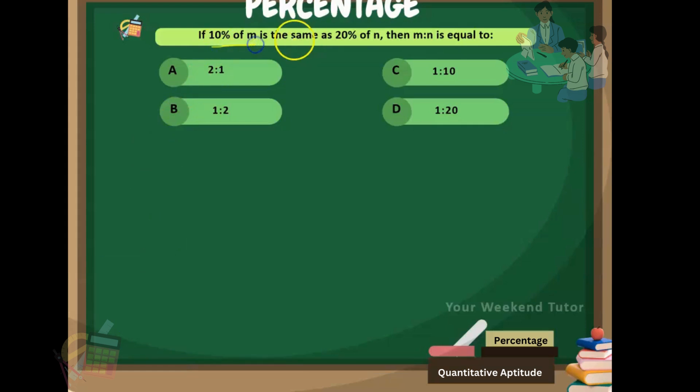What has been there on this board is: if 10% of m is same as 20% of n, they have asked for the m to n ratio. That means 10% of m is equal to 20% of n. Here percentage gets cancelled, so 10m equals 20n. Cancel the zeros: m equals 2n. That means m by n equals 2 by 1. From this we can say that m to n equals 2 to 1, so A is the correct answer.